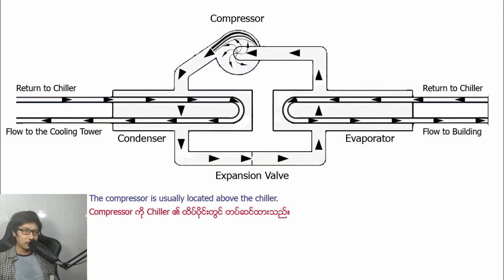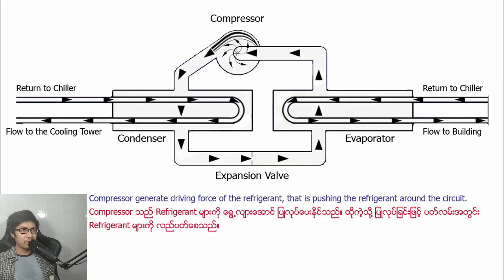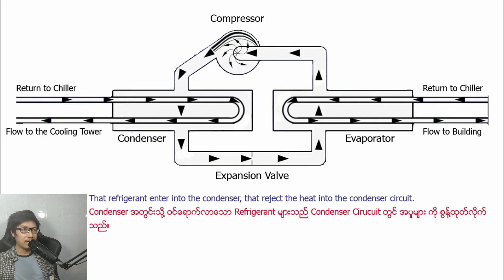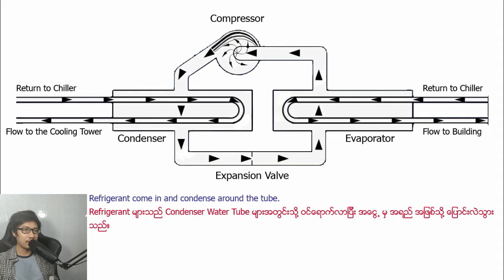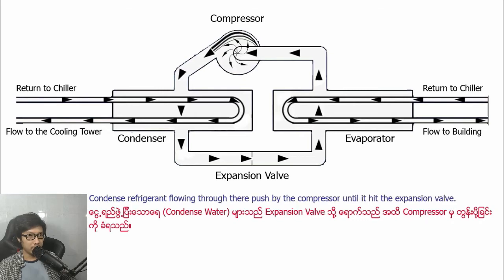The compressor is usually located above the chiller. The compressor generates the driving force of the refrigerant, pushing the refrigerant around the circuit. That refrigerant enters into the condenser and rejects the heat into the condenser circuit. The water is then returned to the cooling tower up on the roof. It then enters again into the chiller through the condenser water line. The refrigerant condenses around the tube.